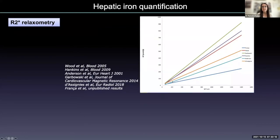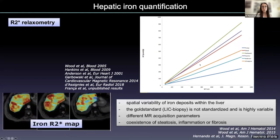The different papers in the literature all show an excellent correlation between the MR measurements (R2*) and liver iron concentration values. But the calibration formulas are different, mainly because the gold standard — liver iron concentration from liver biopsy — is not ideal, since we can have spatial variability of iron deposits throughout the liver and because the way to quantify liver iron concentration from liver biopsies is not standardized among different institutions.